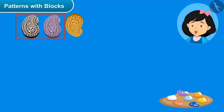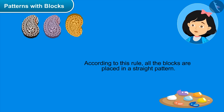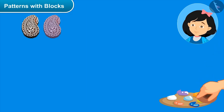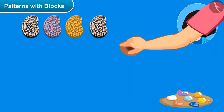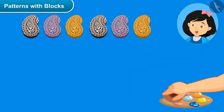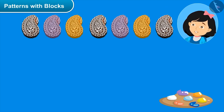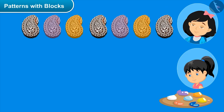Oh no, not like this. First look how I have drawn these two blocks. If the rule by which these two are made is followed, then only you will get the pattern. This one is upside down. Oh, is it like this sis? Yes, perfect! According to this rule we are placing the blocks in a straight pattern. Can we make a pattern by placing the blocks upside down? Yes, definitely we can draw patterns by making our own rules too.